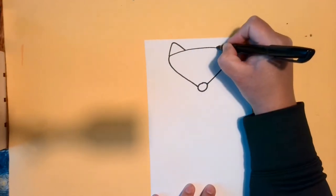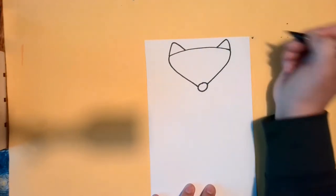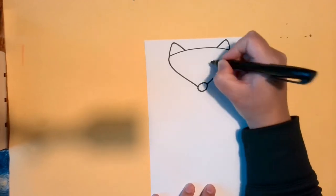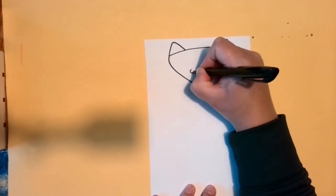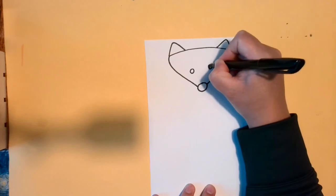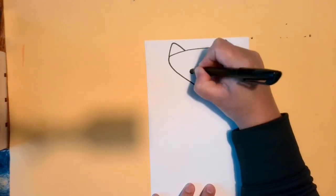Then, I can make triangle ears on top. I add two little circle eyes, and you can color those in black. You don't have to do that part now.